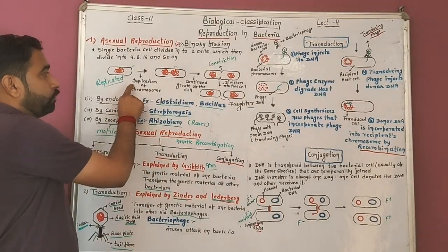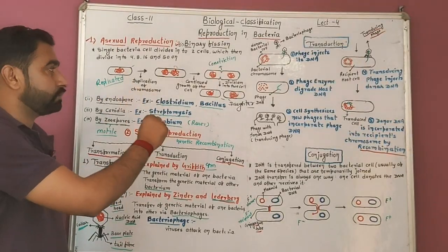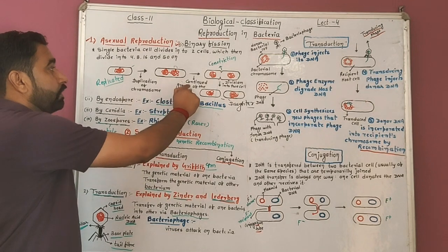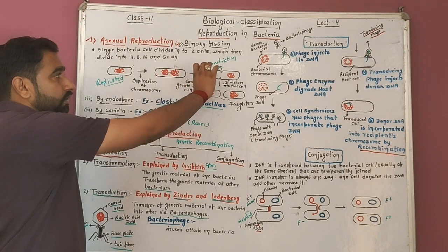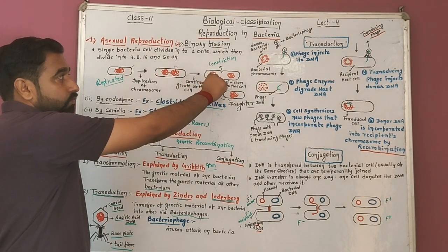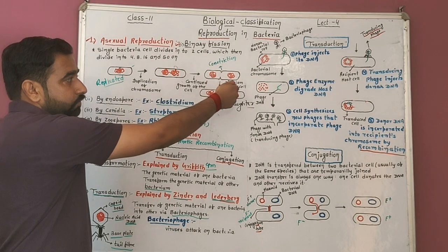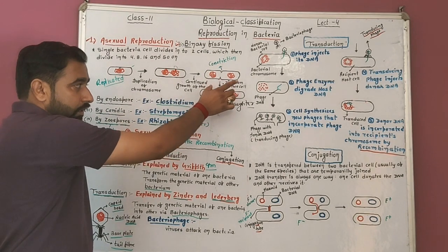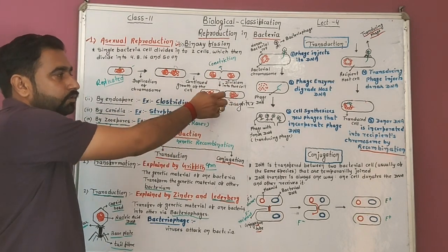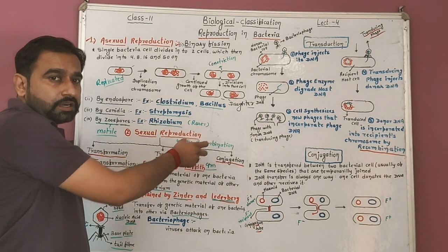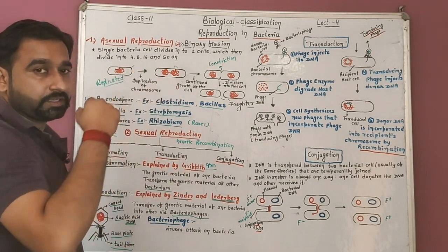The sequence in binary fission is: duplication or replication of the chromosome, continued growth of the cell, then contraction and cytokinesis, division into two cells. Then from two cells it again undergoes binary fission — two to four, four to eight, sixteen, and so on.